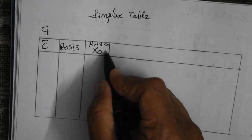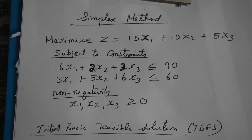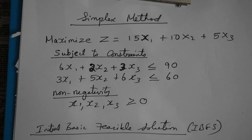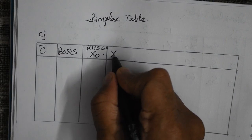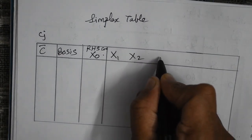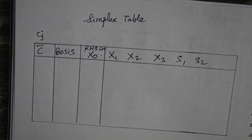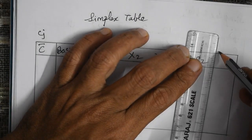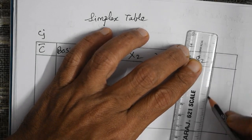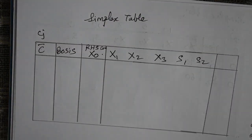After the fixed columns, go to the objective function from the IBFS. For each variable present, open one column: x1, x2, x3, S1, and S2 — that is five columns. Please leave one blank column at the end, as we may need it later. This is the complete format of the simplex table.